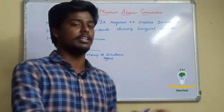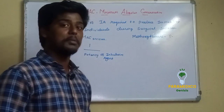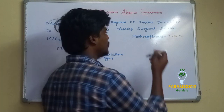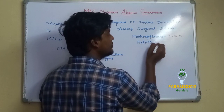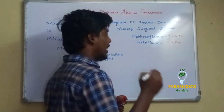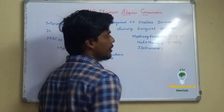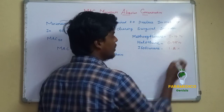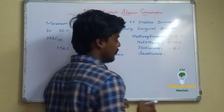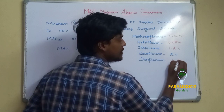When MAC is less, potency is more. The most potent agent is methoxyflurane — MAC is 0.16%. What we use is halothane — MAC is 0.75%. If you use isoflurane, MAC is 1.2%. Sevoflurane MAC is 2%, and desflurane is 6%.